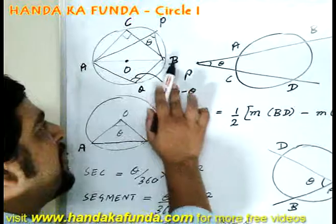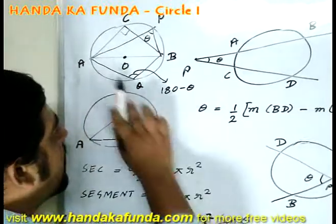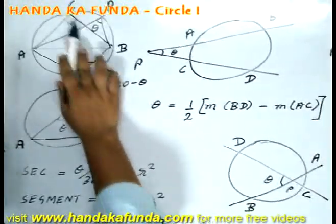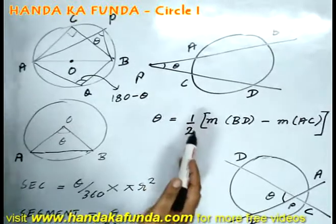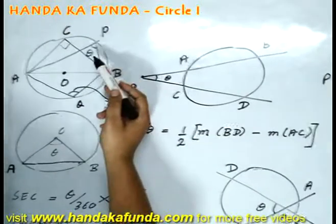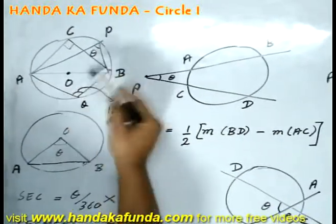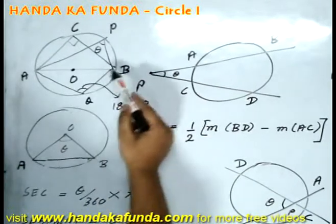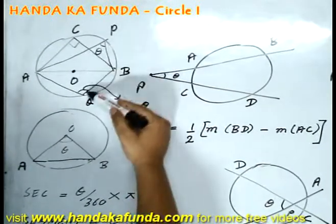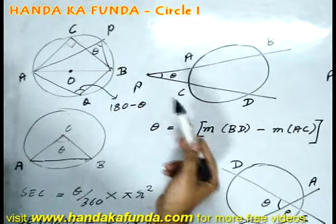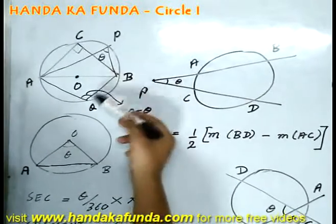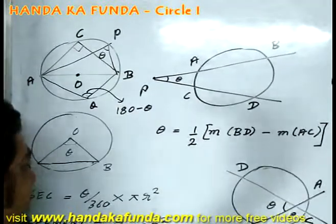Say, in a circle, AB is the diameter. Please remember that the diameter always sustains 90 degrees on the circumference. If, say I am given a quadrilateral PAQB, then its opposite angles are always supplementary. That means, if one is theta, another one will be 180 minus theta.